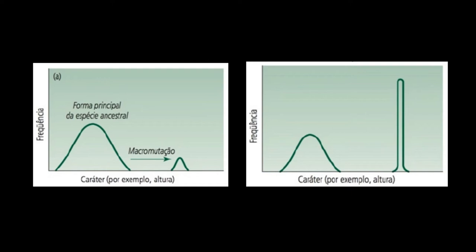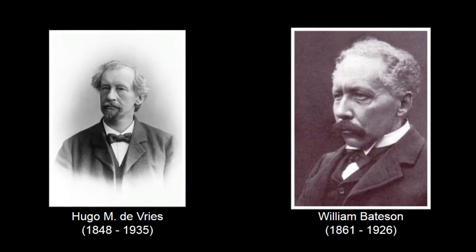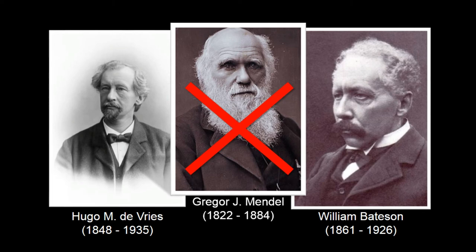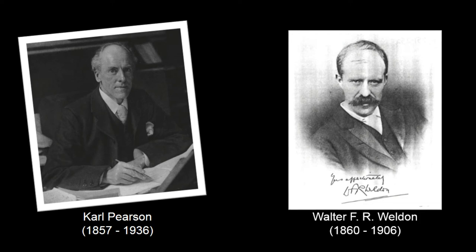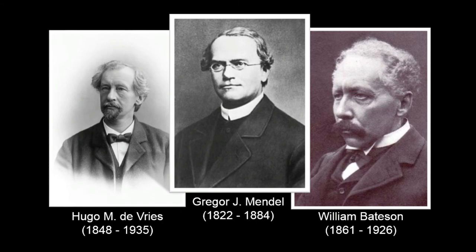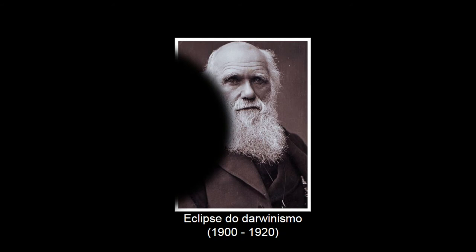Os mendelianos generalizavam essa ideia para a evolução como um todo e não concordavam com a autoridade da seleção natural de Darwin. Carl Pearson e o também matemático e estatístico Walter Weldon lideraram a oposição declarada dos biometristas à redescoberta de Mendel. Com o tempo, a comunidade científica foi incorporando cada vez mais as teses mendelianas, provocando, inclusive, entre os anos de 1900 a 1920, o chamado eclipse do Darwinismo.